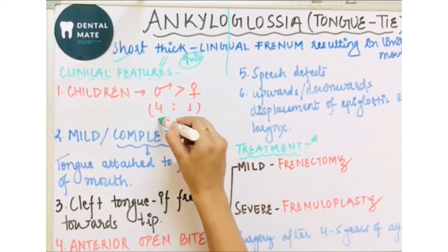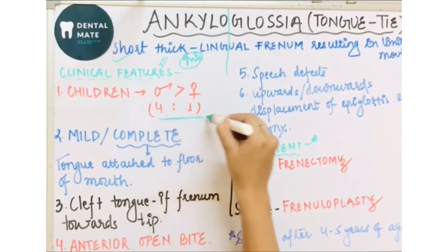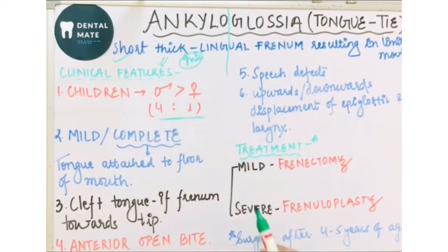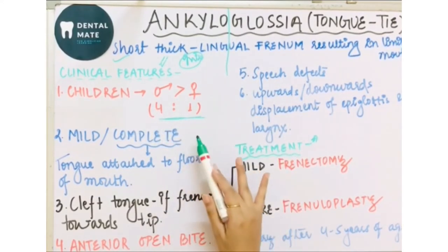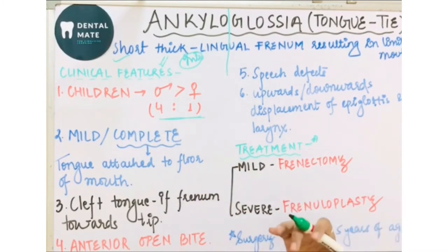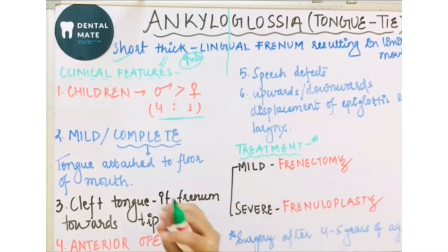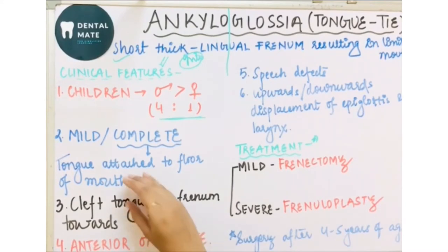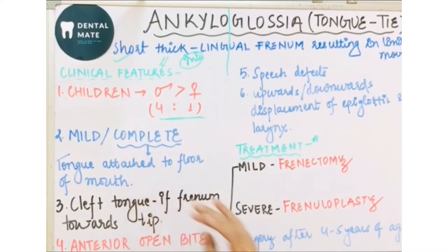Ankyloglossia could be mild or complete. In mild cases, there is limited movement of the tongue. In complete tongue tie, the tongue is completely attached to the floor of the mouth.